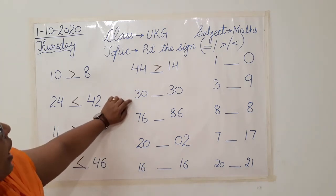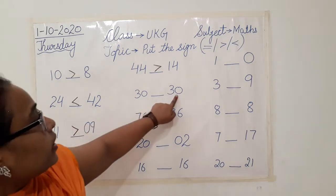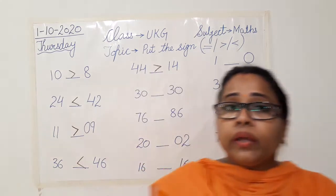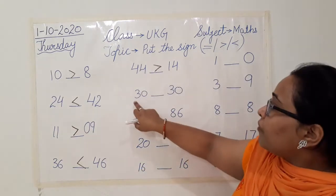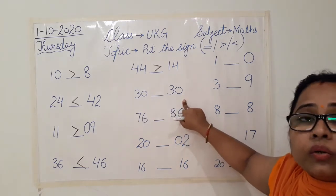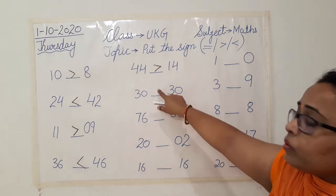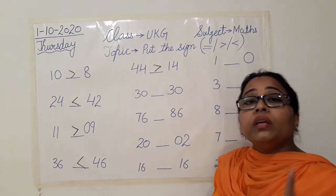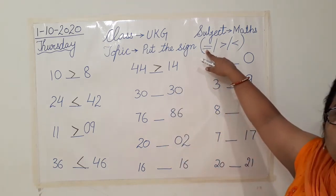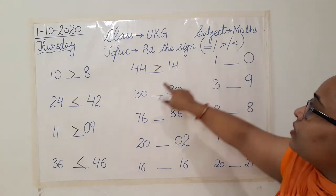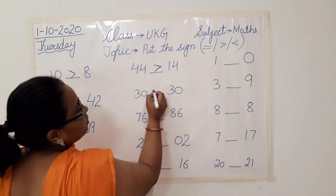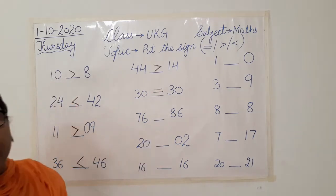Next we have thirty on this side and thirty on this side. So here it is very easy. Which sign is to be put here? We have thirty on one side and thirty on the other side — they both are equal. So which sign are we going to use? We are going to put equal to. And what is the equal to sign? This one. So we are going to put this sign like this.